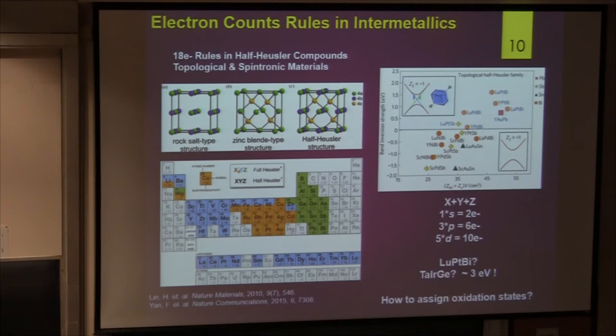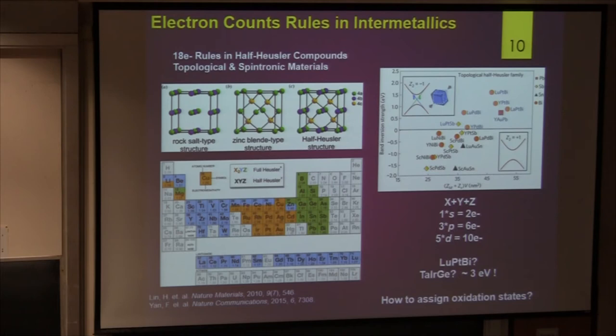The charge balance always works very well when it works. However, for intermetallics there's a problem — we cannot assign oxidation states to many of them. For example, tantalum, iridium, germanium: they are far from each other in the periodic table, but if we put the three elements together it makes a semiconductor with a 3 eV band gap. Can you assign oxidation states to TaIrGe? No, we can't.